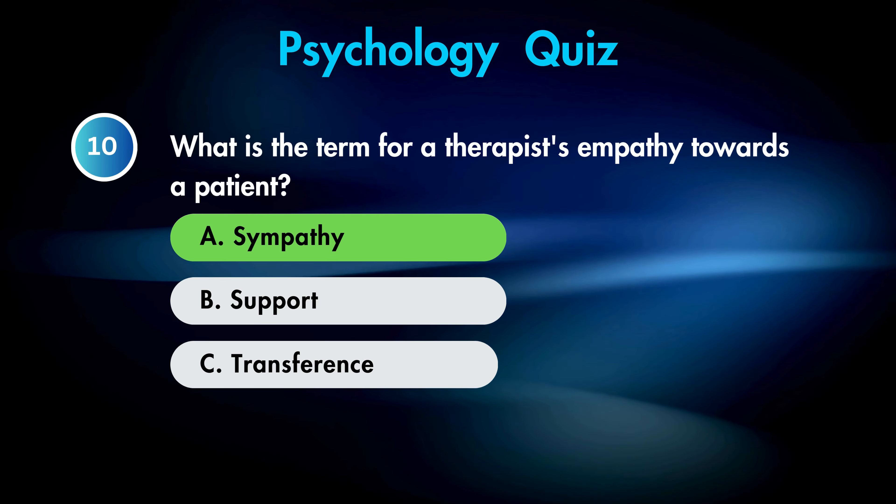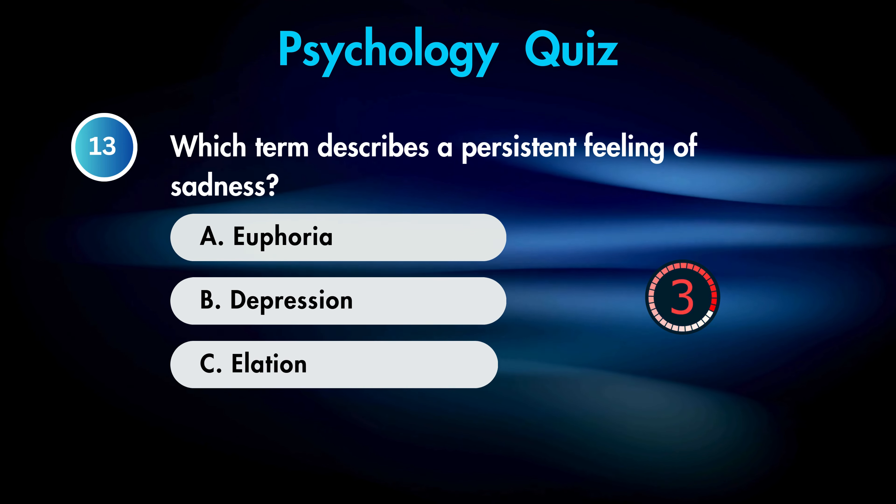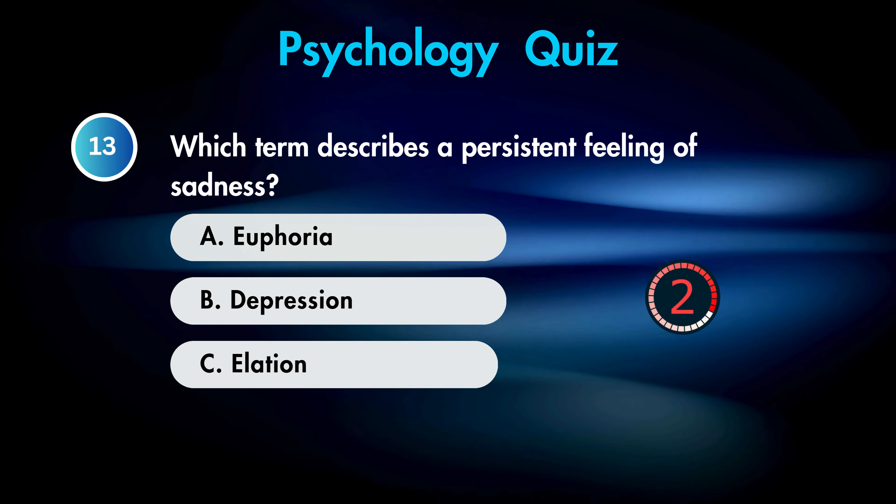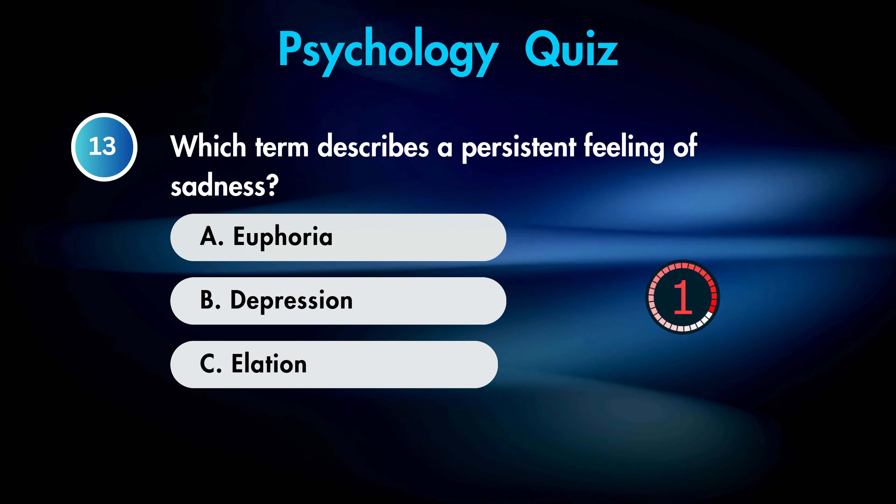Which part of the brain is responsible for memory? Answer B. Temporal lobe.